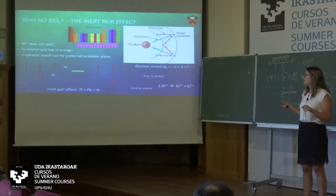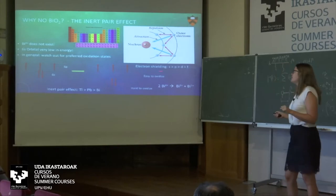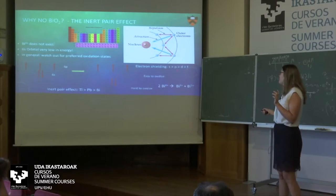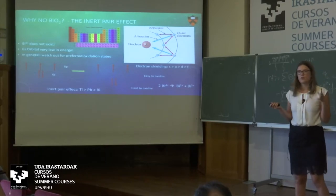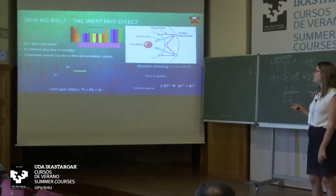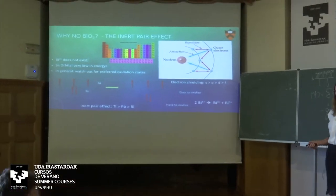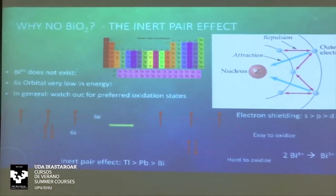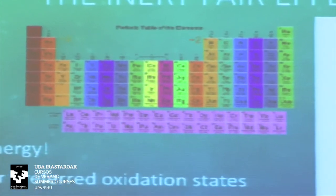Once you go through the lanthanide row, every element you add gives a positive charge to the nucleus and an electron that doesn't shield the others. So the effective nuclear charge increases and pulls the electron cloud closer together. That's why zirconium and hafnium have almost the same size even though you'd expect the atom to grow going down the periodic table. And filling all those lanthanides means when you reach thallium, lead, and bismuth, the 6s orbitals get really pulled closer to the nucleus and lowered in energy.